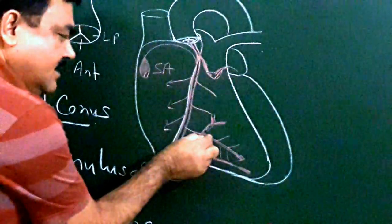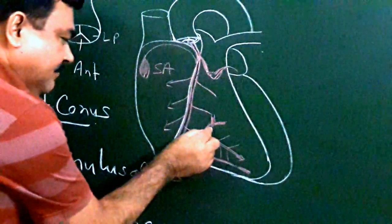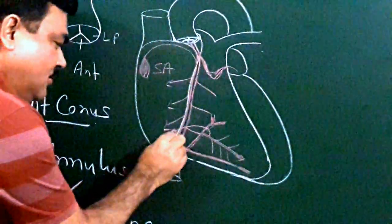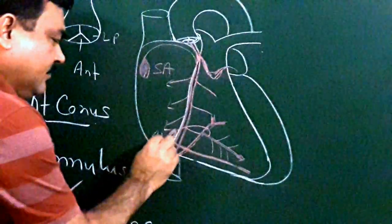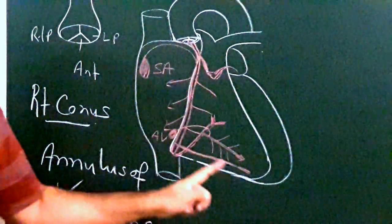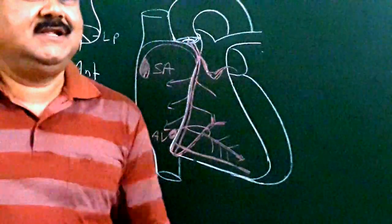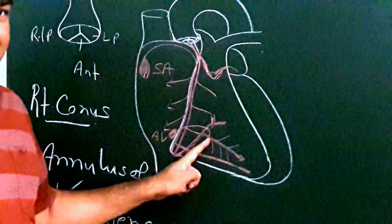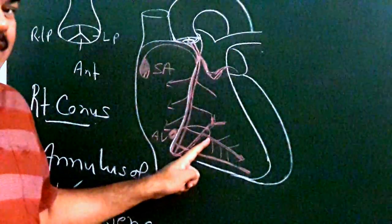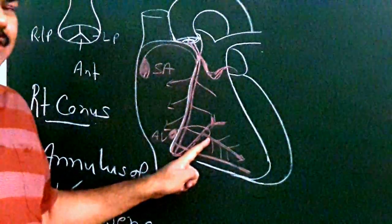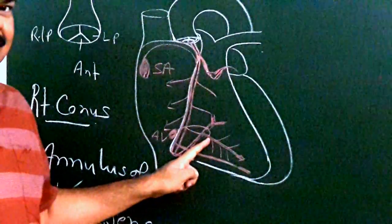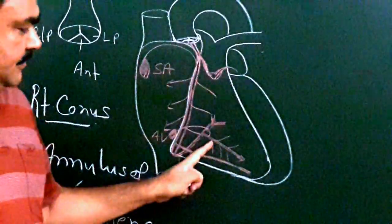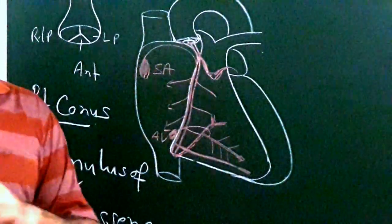Another branch arising from the posterior interventricular artery supplies the AV node. In about 80–90% of cases, the AV node is supplied by this branch of the posterior interventricular artery arising from the right coronary artery. In 10–20% of cases, it is supplied by a branch arising from the left coronary artery.